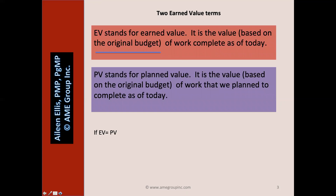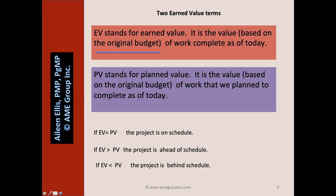If EV equals PV, it means the project is on schedule — the work that is complete equals the work we planned to complete as of today. If EV is greater than PV, we're ahead of schedule; we have more work complete than planned as of today. If EV is less than PV, the project is behind schedule — we have less work complete than planned as of today. Make sure you understand these three ideas before you move on.